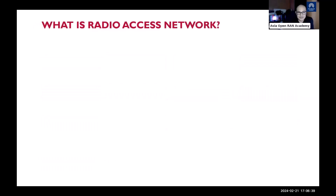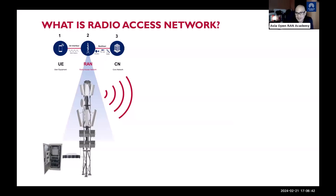The radio access network is the part of the system that gives us mobile coverage — the main reason you have signal on your phone. These infrastructures are the nearest to subscribers, visible all around us, and widely distributed to provide seamless coverage and mobility.